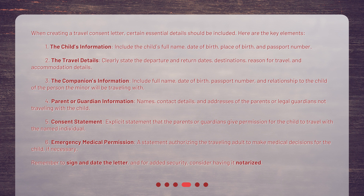3. The companion's information: include full name, date of birth, passport number, and relationship to the child of the person the minor will be traveling with. 4. Parent or guardian information: names, contact details, and addresses of the parents or legal guardians not traveling with the child.